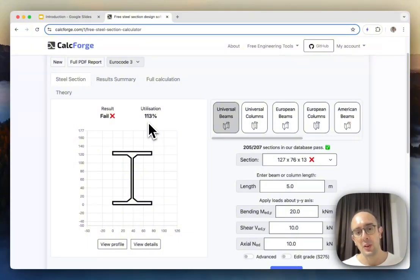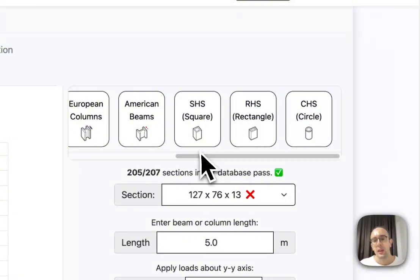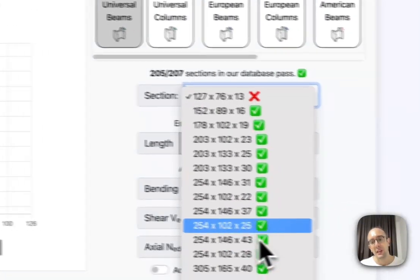Your section is being fully used by all of this force that you're applying to it, and so in this case it's over utilized, it's 113%, so it's failing. Here on the right I can actually pick different categories of steel, so I can use universal columns, I can use European sections, American sections, hollow sections.